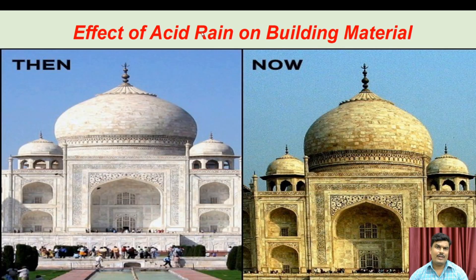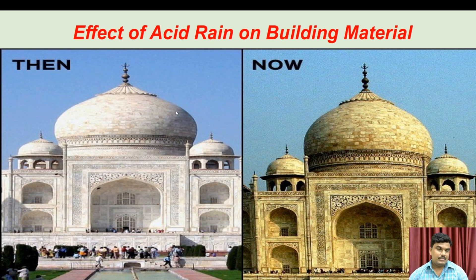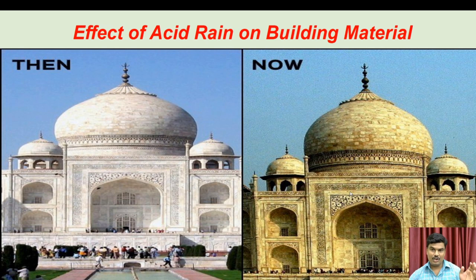The effect of acid rain on building materials: one of the Seven Wonders of the World, the Taj Mahal, was previously white in color. But now its color has changed to yellow, and this yellowing is caused by acid rain.